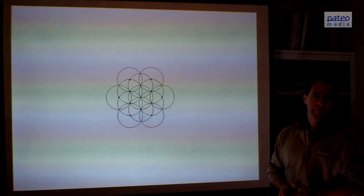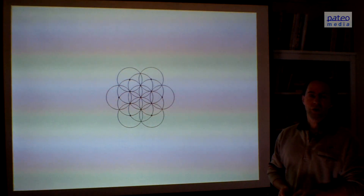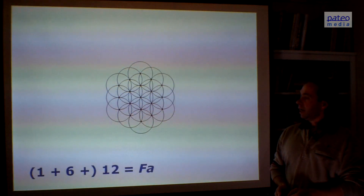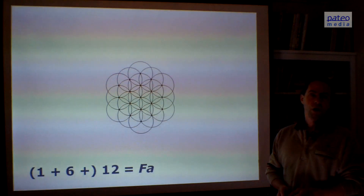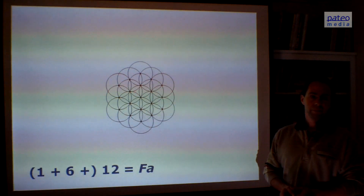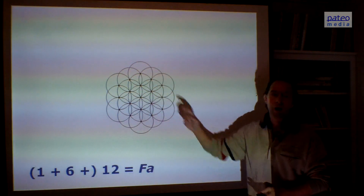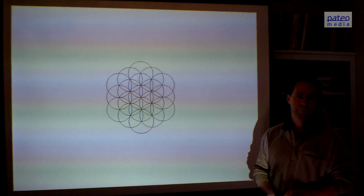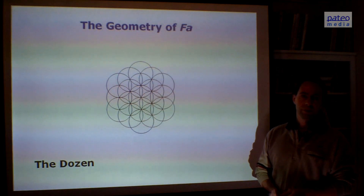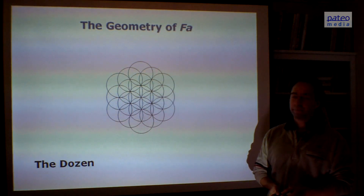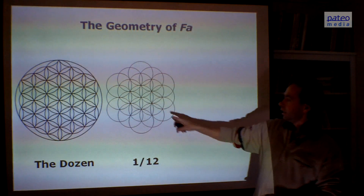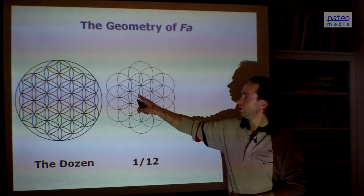Adding more circles — this is not holy yet because a number of circles are still lacking. So we continue, and now we find another holy geometry: this is the geometry of Fa, where we find 12 circles in the new outer ring. Geometry of Fa — and it's the dozen. Dozen means the whole of 12, one over 12. Here you see that the inner circle has 12 leaves, so to say.